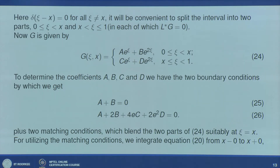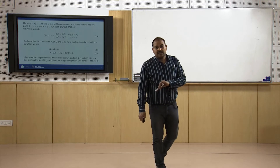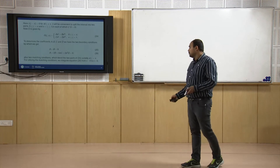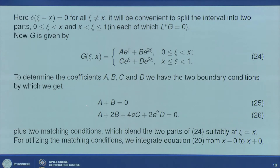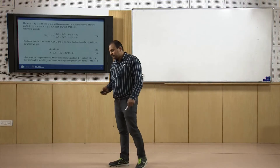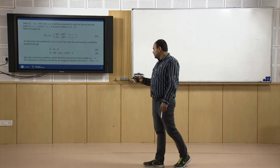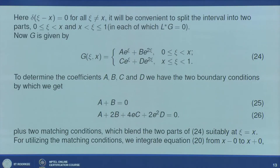The boundary conditions give us: g(0,x) = 0 implies a + b = 0, and 6g(1,x) − 2g_ξ(1,x) + g_ξ(0,x) = 0 gives a + 2b + 4e²d = 0. Along with these we have two matching conditions obtained from L*g = δ(ξ−x), by integrating from x⁻ to x⁺.